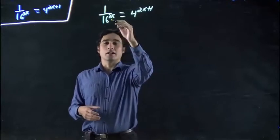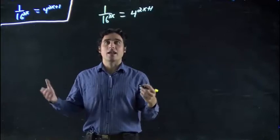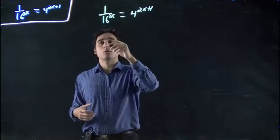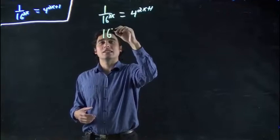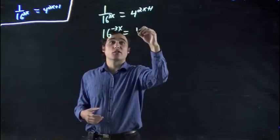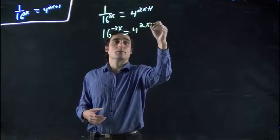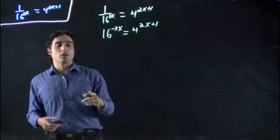But right now, this is on the bottom. We don't want that. We're going to have to bring it up. And remember, that's where we're using the negative exponents. Because 1 over 16 to the 3x is the same as saying 16 to the negative 3x. That was really the first trick we had to use for this problem.